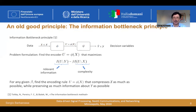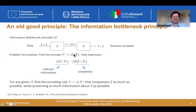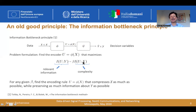The second important point is the information bottleneck principle. We have data X to transmit, and we want to find the probabilistic encoder phi such that when we use U, the encoded data, we are able to recover the decision variables Y. Y is not necessarily coincident with X. The encoder is designed to maximize a linear combination between the relevant information — the mutual information between U and Y, which says how much U is relevant to recover Y — minus beta times the complexity, which measures how many bits are necessary to encode X using U.